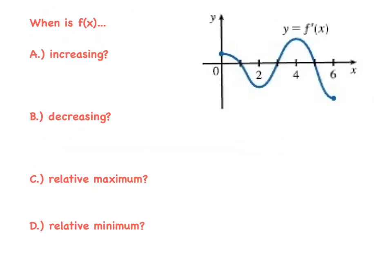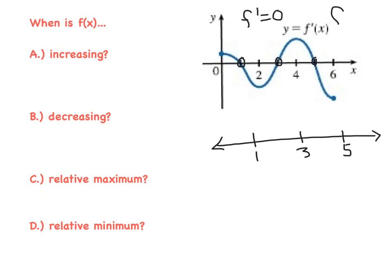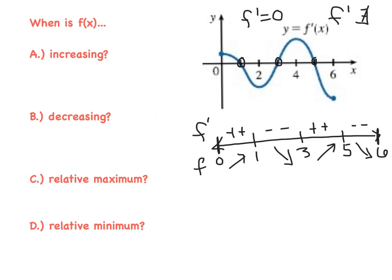We've got a brand new graph of f prime, so we're going to rehearse everything we just did. Great time to hit pause and try this on your own. First, I'm going to make a sign chart for f prime. Is f prime ever equal to zero? Yes, at x equals 1, 3, and 5. Is f prime ever undefined? No — the graph is continuous throughout the entire interval. The restricted domain is from 0 to 6, so I'll put hard endpoints of 0 and 6. f prime is positive, then negative, then positive, then negative — meaning f is increasing, decreasing, increasing, decreasing.